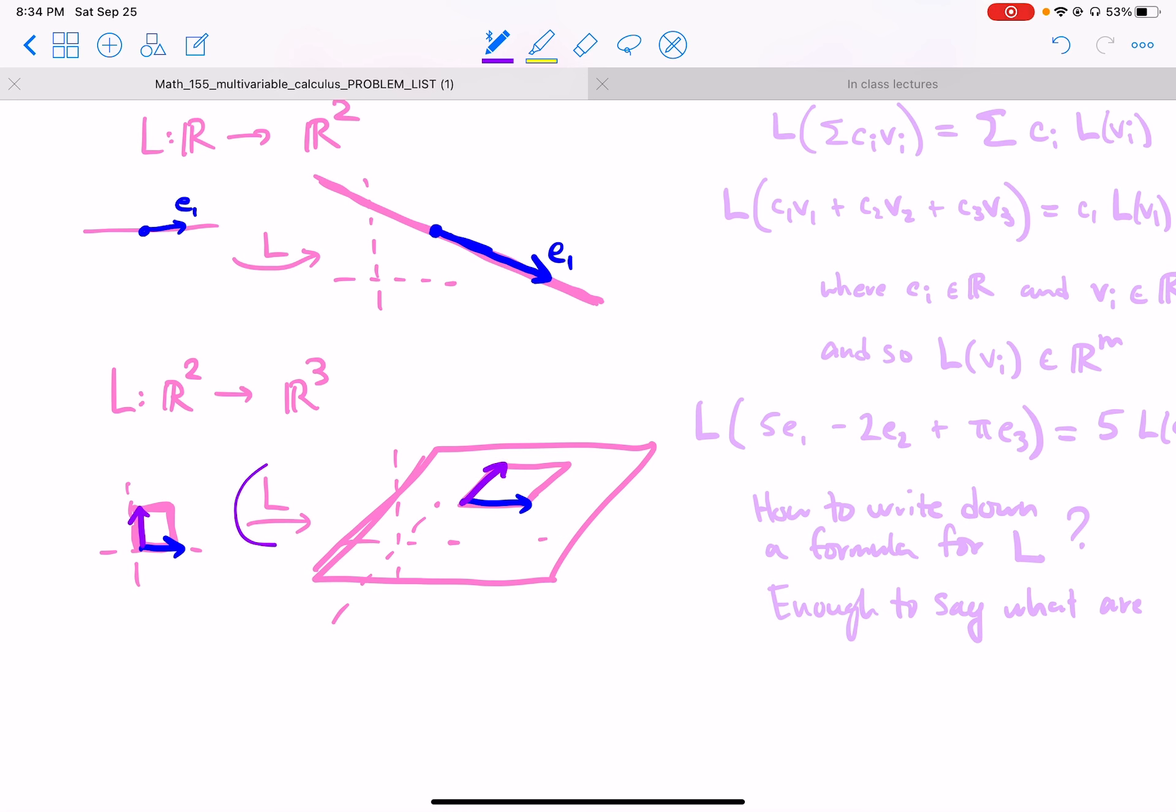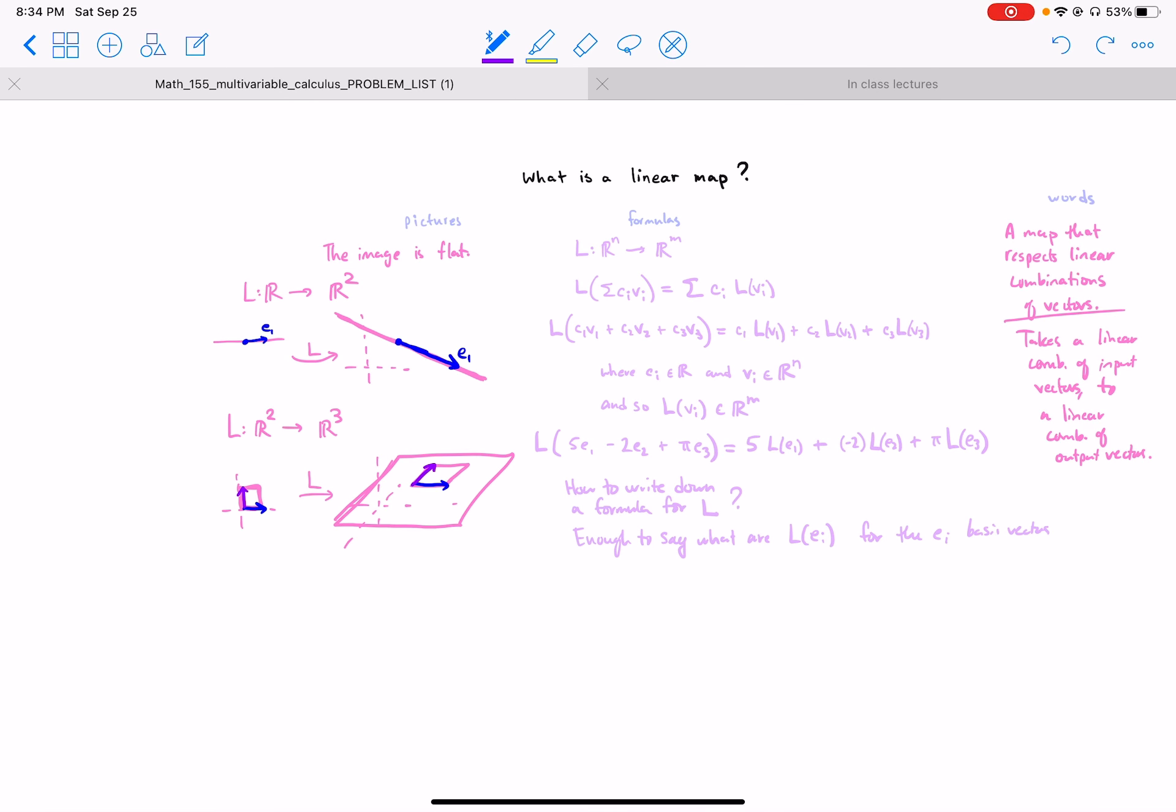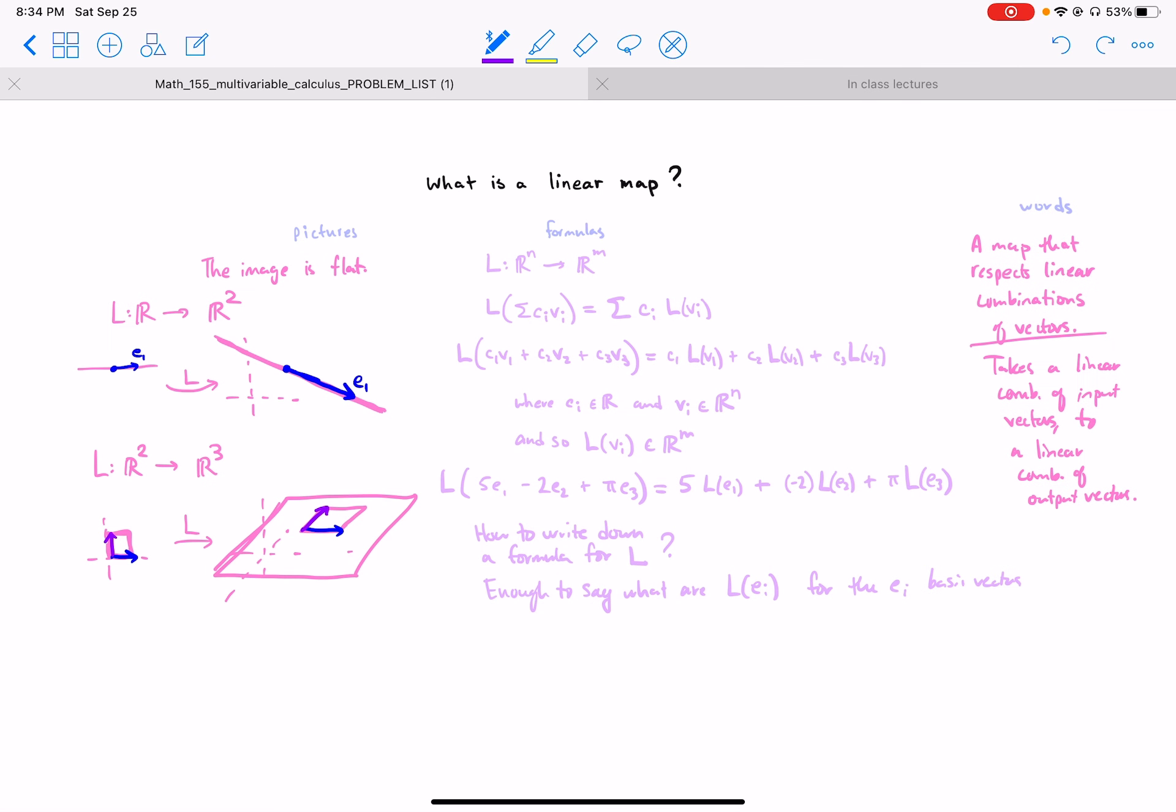So it's enough to look at what L does to the two basis vectors if its input is R2, or just to the one basis vector if the input space is one-dimensional. Okay, so those are sort of some images, and so now we see linear mapping formulas, words, and cartoon pictures.